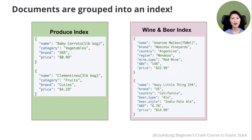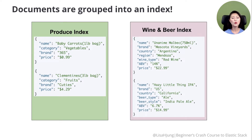Things are easier to find when you group them in a logical manner. Documents that share similar traits and are logically related to each other are grouped into an index. For example, documents of clementines and carrots would be grouped under the produce index, and documents of Malbec and IPAs would be grouped under the wine and beer index. So to sum it up, indices are used to group documents that are related to each other, so we know where to find certain information.